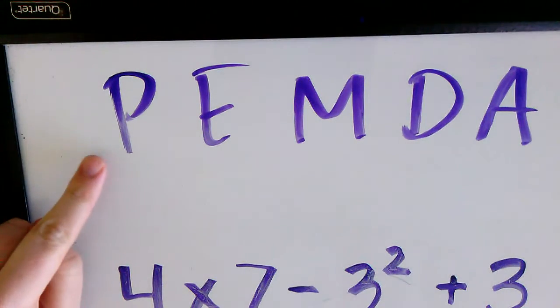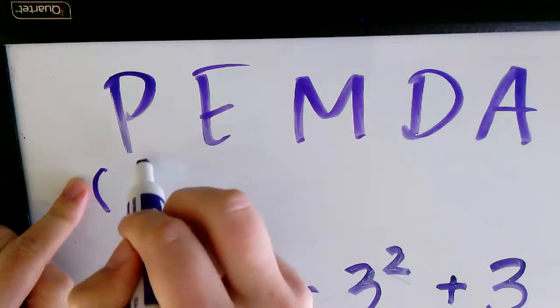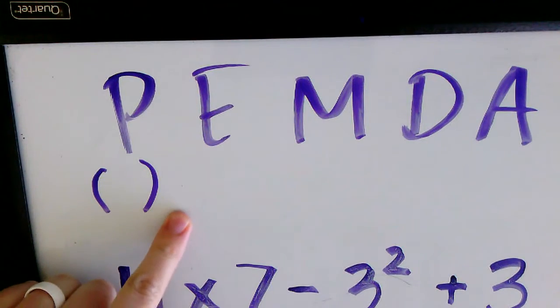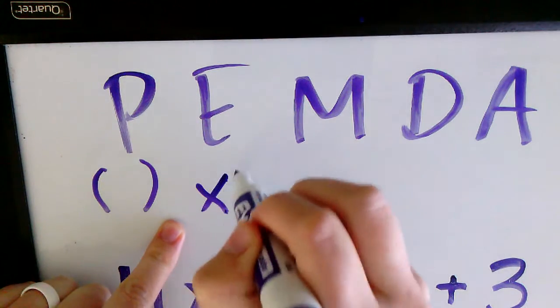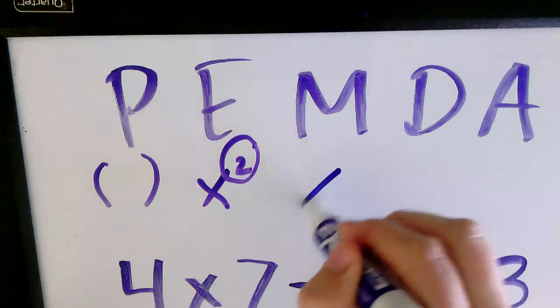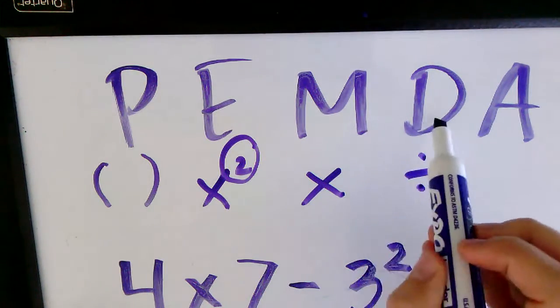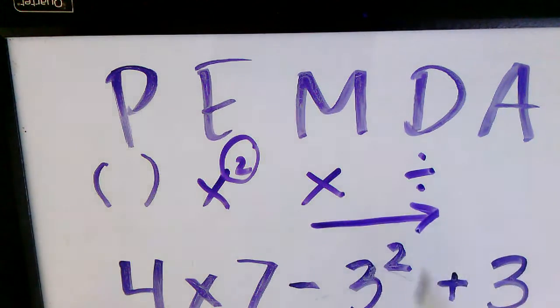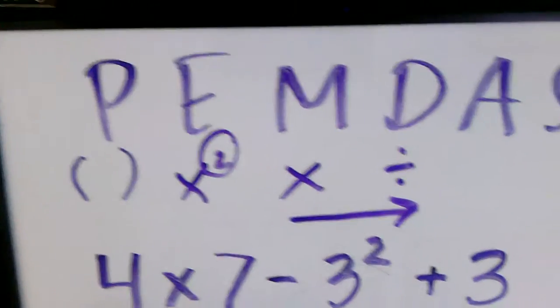The very first step, if it's in the problem, is to do the parentheses. The second step, if it's in the problem, is to do the exponent, and then you multiply and divide. Multiplication and division are equal, so you go from left to right with multiplication and division.